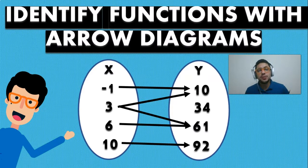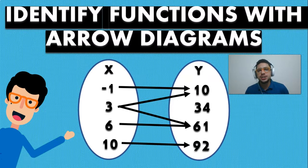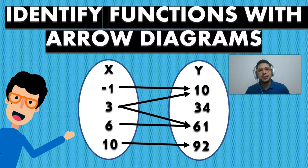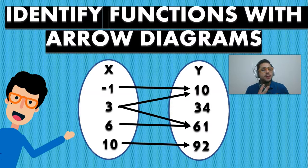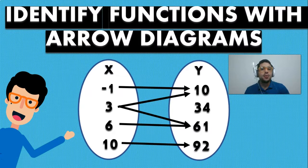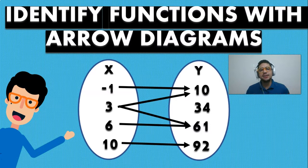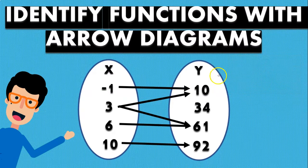Welcome guys to today's video, in which we're going to be learning how to identify if a relation is a function or not using arrow diagrams. We're going to be taking a look at some examples and also two basic definitions: what is a relation, what is a function, and what actually tells us if a function is really a function.